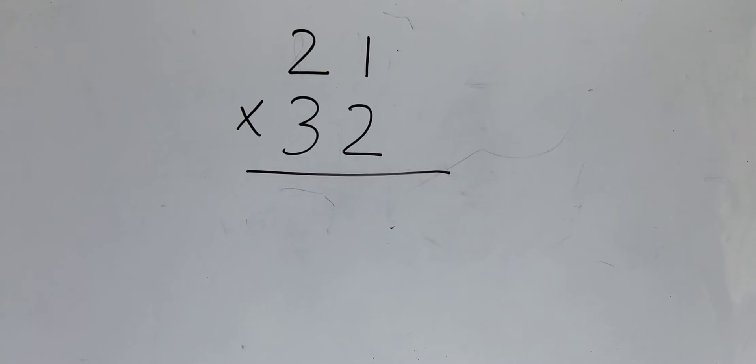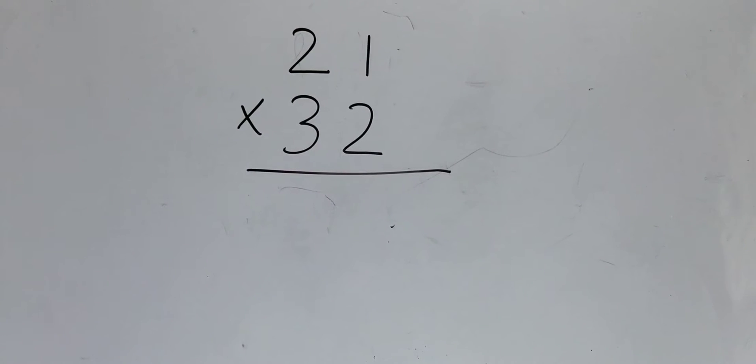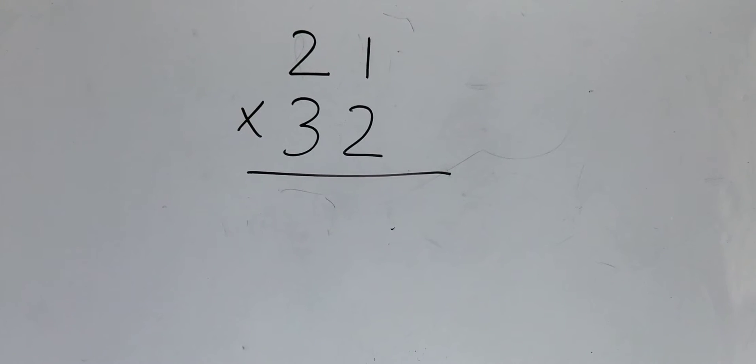Hi! Today we are going to learn how to multiply two digit numbers together. Let's use 21 times 32.